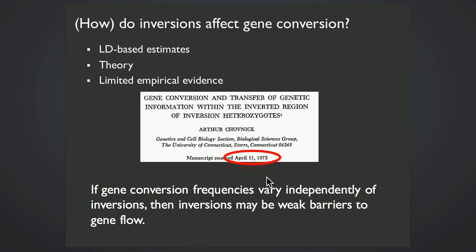So I want to know if gene conversion frequencies vary independently of inversions, because if this is true, then inversions may be weaker barriers to gene flow than we often assume. We tend to think of inversions as these impermeable barriers to gene flow because crossing over is suppressed, but I think it's a lot more complicated than that.